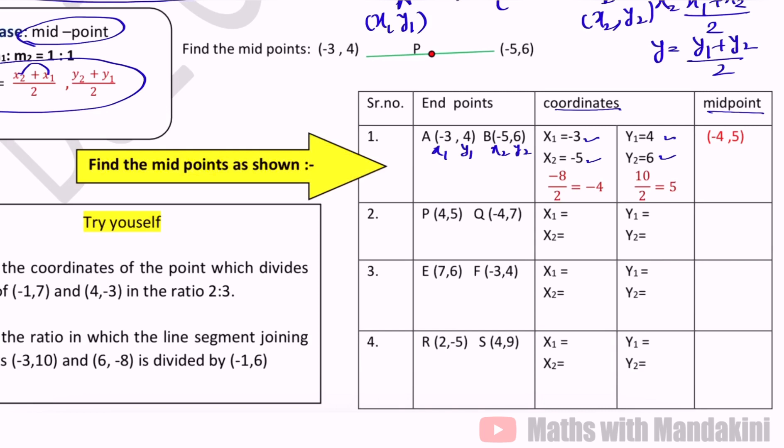Midpoint nikalna hai to x ke liye kya hoga minus 3 plus minus 5 upon 2, x1 plus x2 upon 2 yaani minus 8 upon 2 that is minus 4. Similarly 6 plus 4 upon 2, 10 upon 2 that is 5. And the required midpoint is (-4,5). Now second part, x1 is 4, x2 minus 4, y1 is 5, y2 is 7, so we get 0 upon 2 that is 0, and 12 upon 2 is 6, so (0,6).